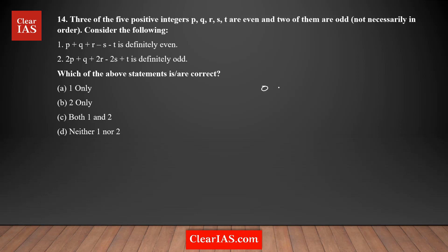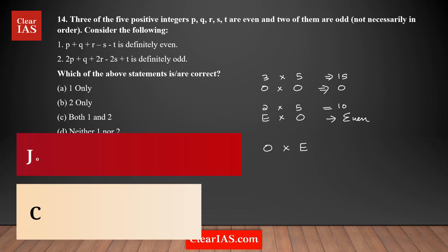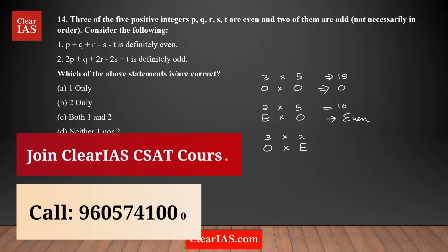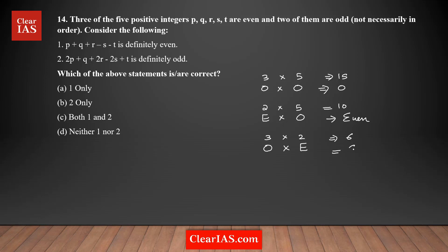For multiplication: odd times odd gives an odd result — for example, three times five equals 15, which is odd. Even times odd gives an even result — two times five equals ten. Odd times even also gives even — three times two equals six.